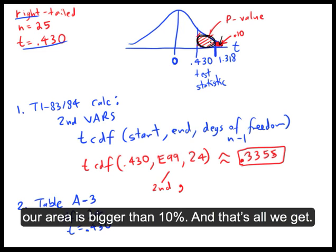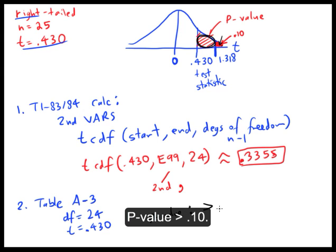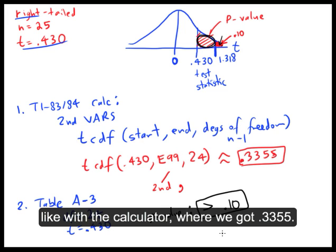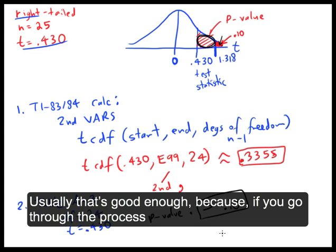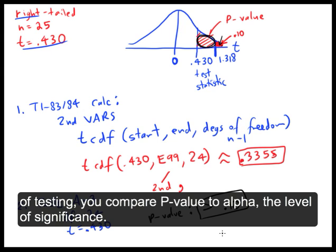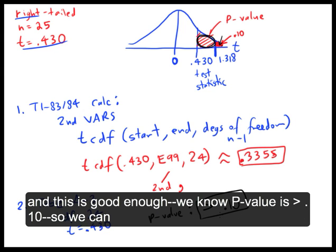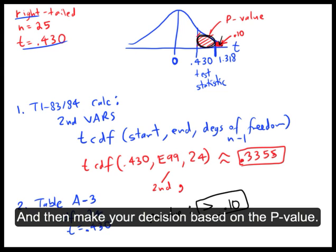our area is bigger than 10%. That's all we get—just that estimate. So we estimate that the p-value from that table is greater than 10%. You don't get a specific number like you do by the calculator (0.3355), but we only get greater than 10% by the table. But usually that's good enough because you compare it to the level of significance, alpha, afterwards. Alpha is usually 1% or 5% or 10%, so this is good enough. If you know the p-value is greater than 10%, you can use this to compare it to whatever your alpha value may be and make your decision based on the p-value.